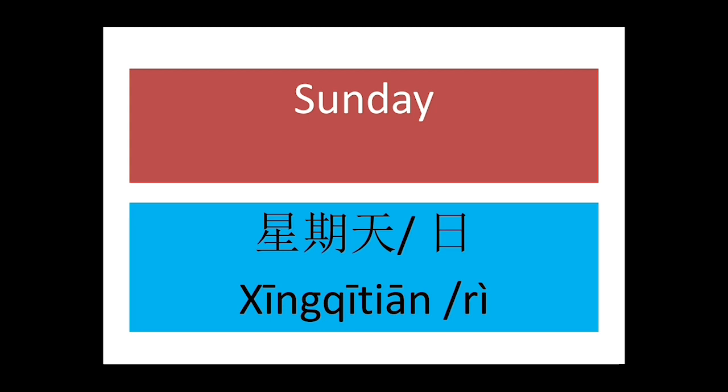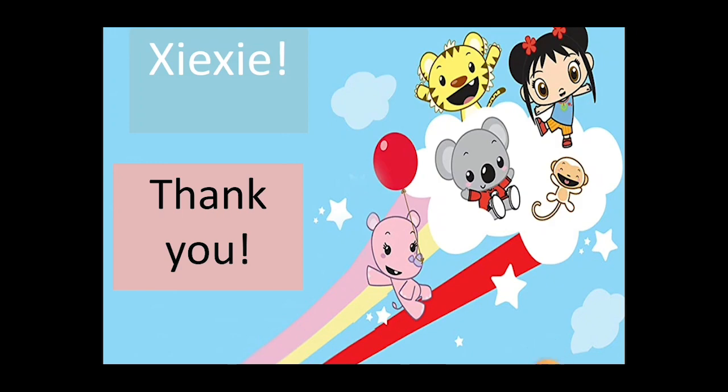Our last day is Sunday. How do we say Sunday? Xingqi Tian, or Xingqi Ri. We have two ways to say Sunday — you can use either of them: Xingqi Tian or Xingqi Ri. Students, we will study till here today.